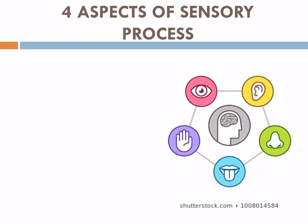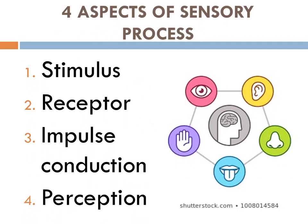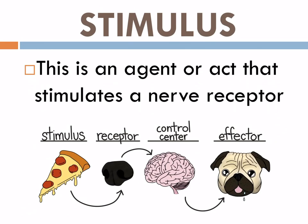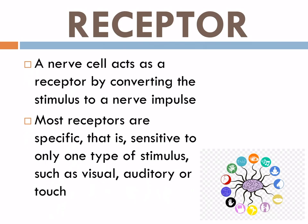There are four aspects of the sensory process: stimulus, receptor, impulse, and perception. For the stimulus, it is an agent or act that stimulates a nerve receptor. The receptor is a nerve cell that converts the stimulus into a nerve impulse. Most receptors are specific and sensitive to only one type of stimulus, such as visual, auditory, or touch.